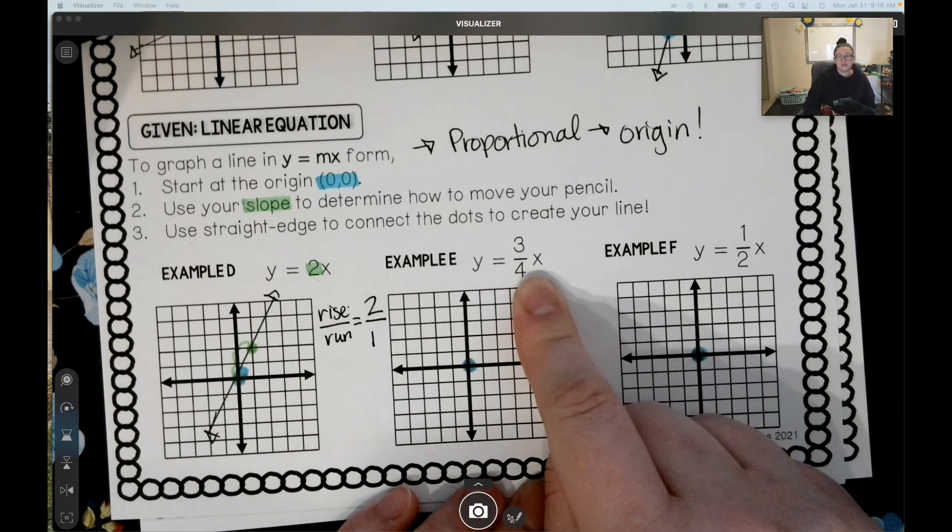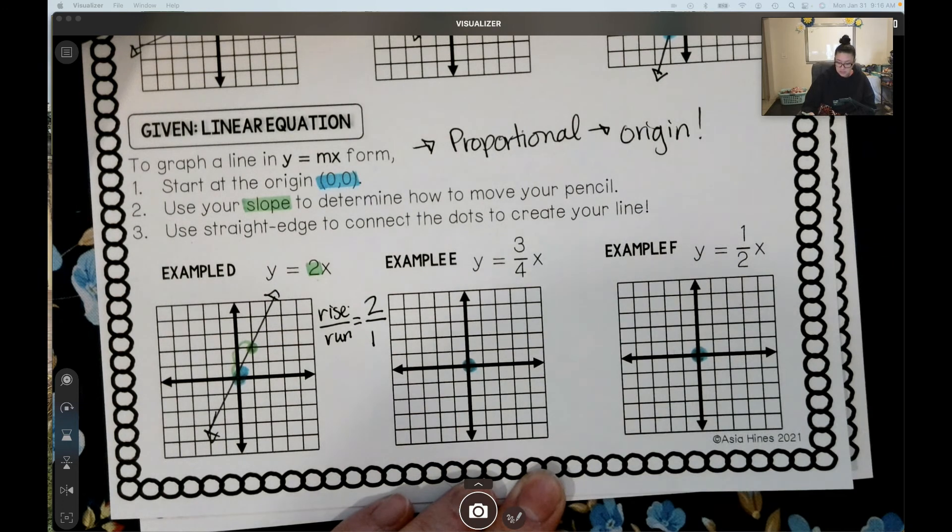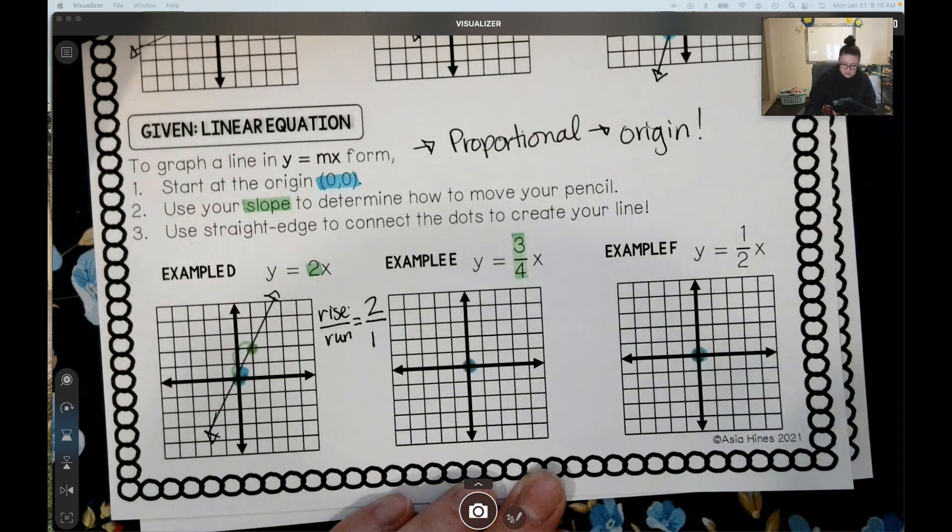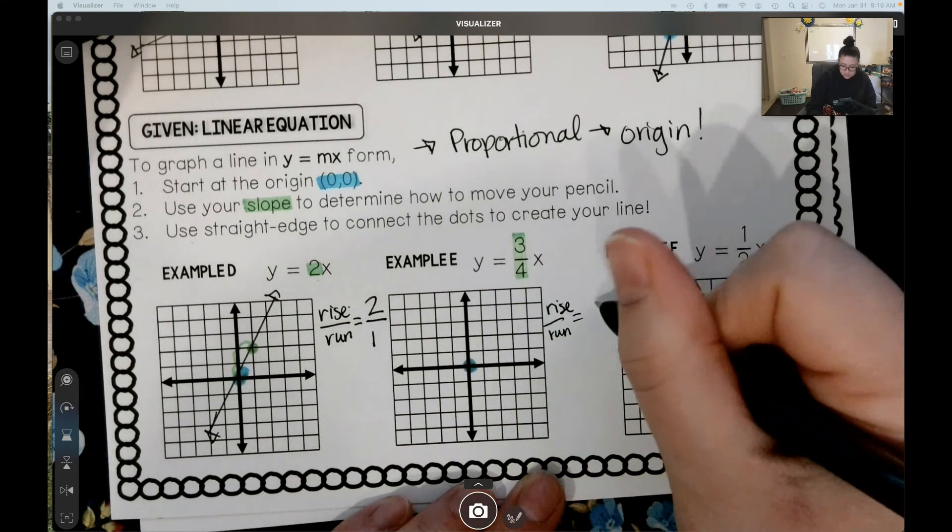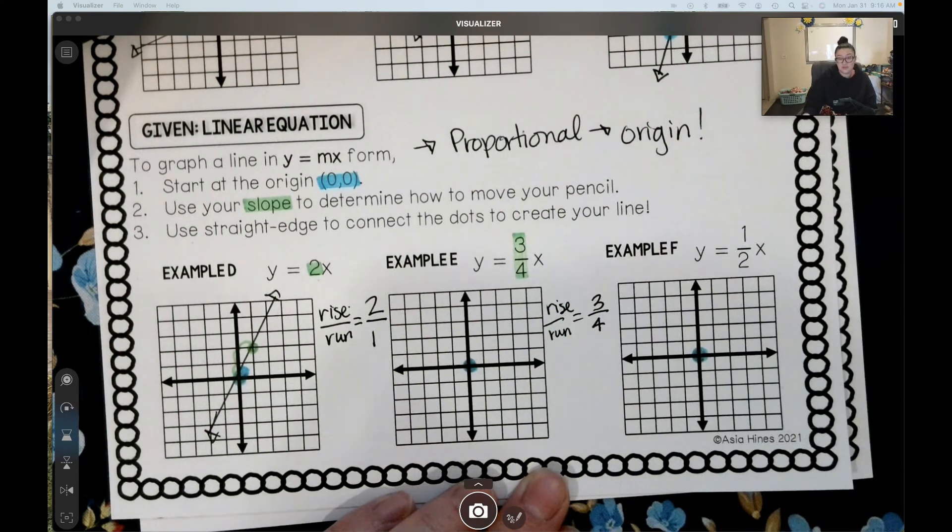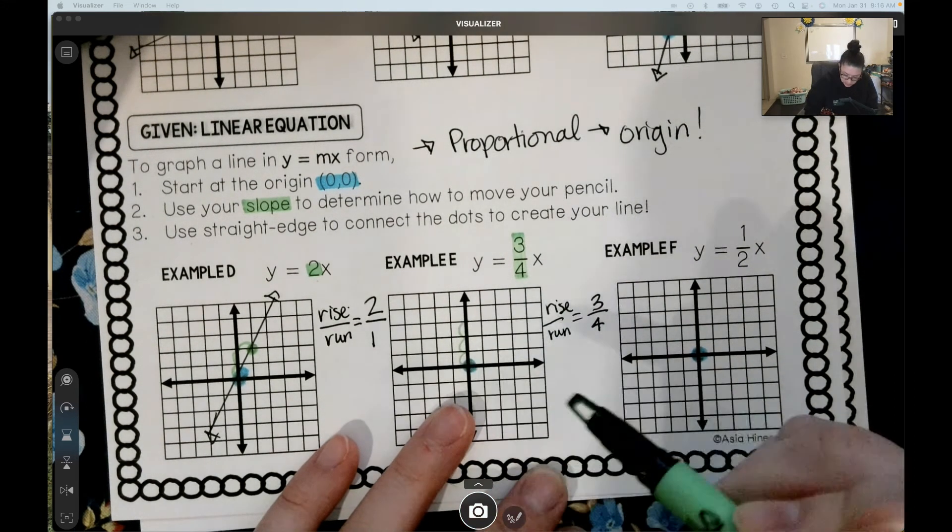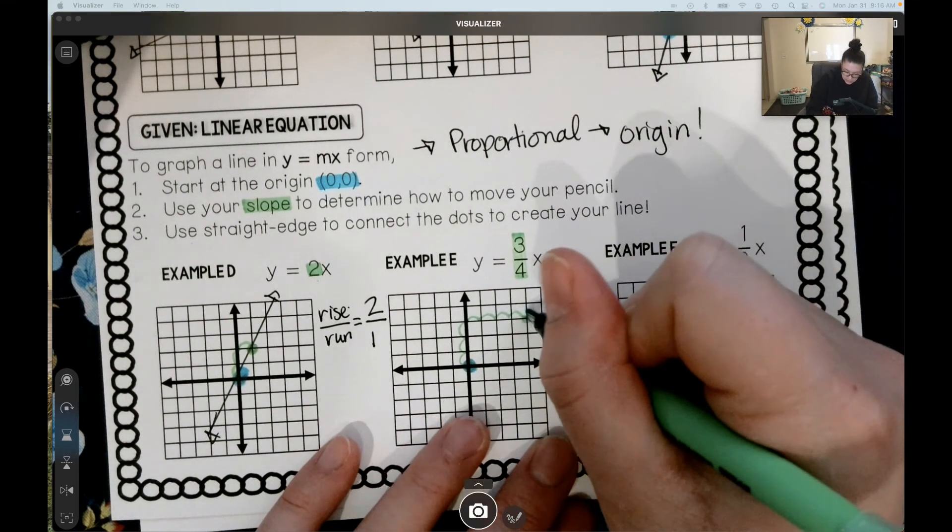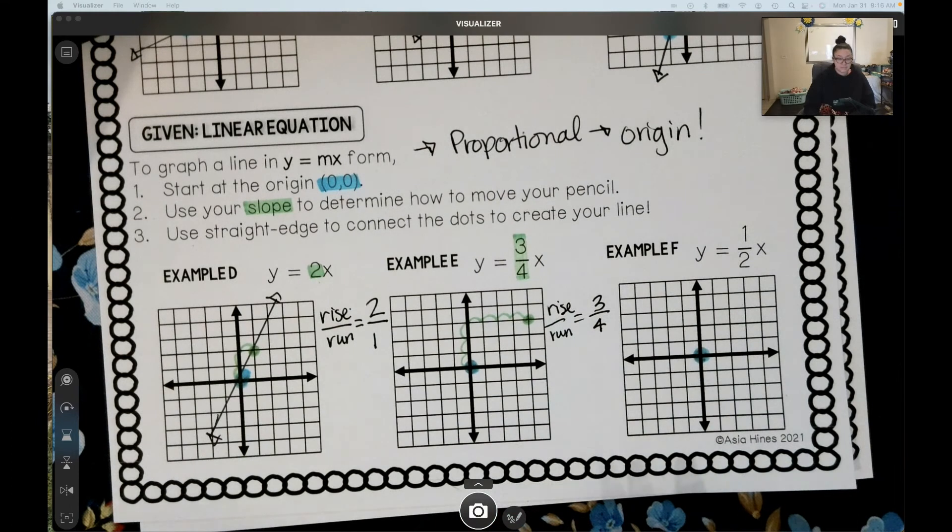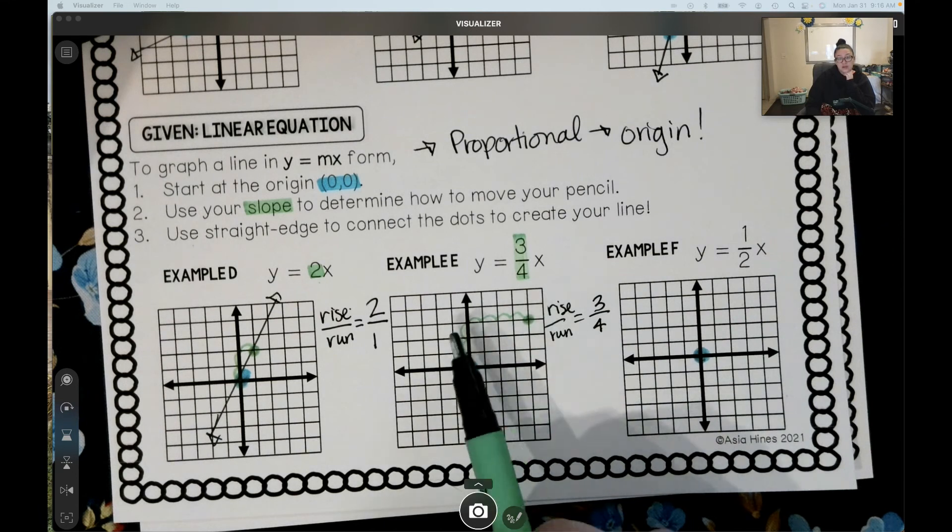Next, we have y equals 3 fourths. It's a multiplicative relationship, so I know I've got my origin to start. And I need to take a look at my slope, my 3 fourths. Again, slope is rise over run. My slope is 3 fourths. It's already in a fraction for me. So I know I need to rise. I need to go up 3. And then I need to run 4. And I put my dot. It doesn't matter if you start there and go that way. Or if I go backwards. Or if I keep going.